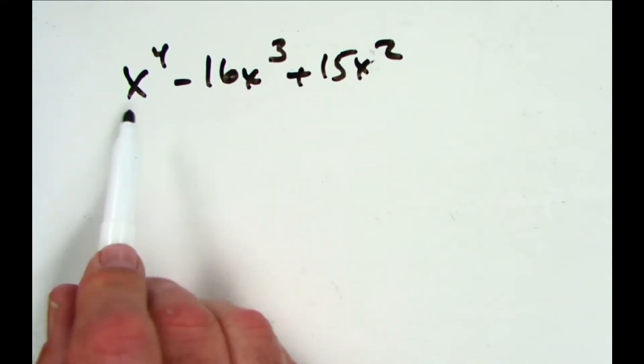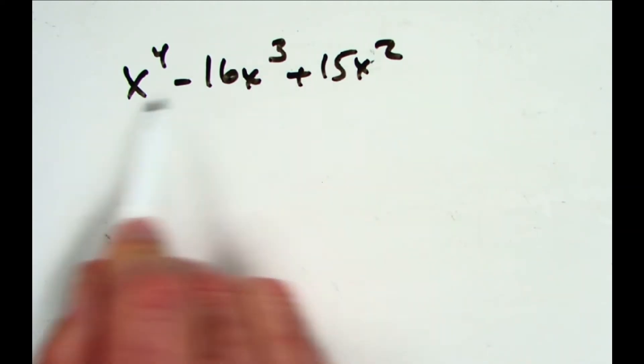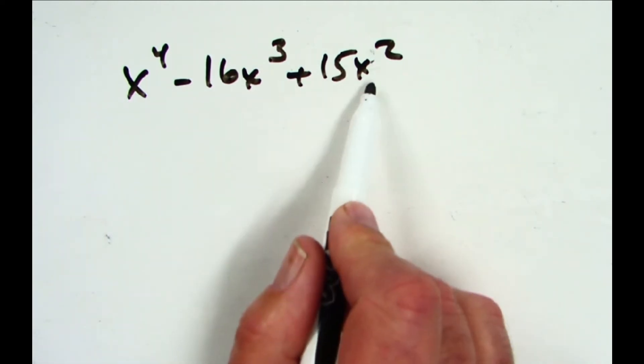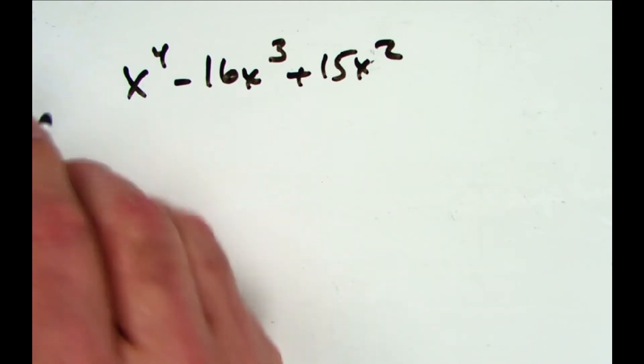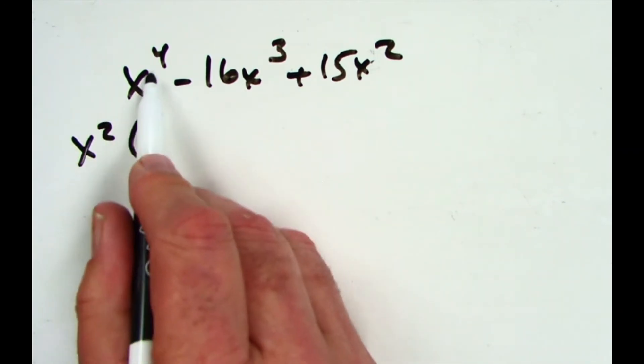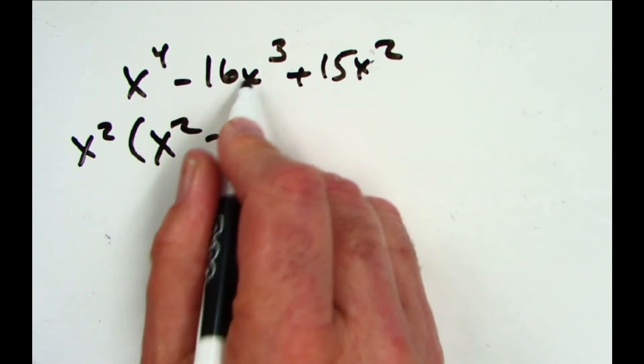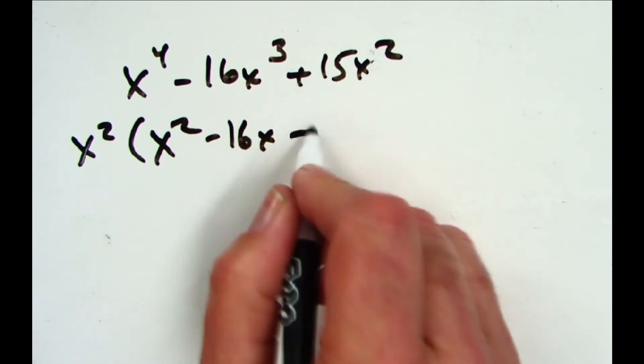All right, here we go. x⁴ - 16x³ + 15x². It is a trinomial, but the first thing I do is look for greatest common factors. I don't have a number to take out, but I could take an x² out of each one. So I'm going to put that in front, and what would be left over: if I take x² out of that, I'll have x² - 16x + 15.